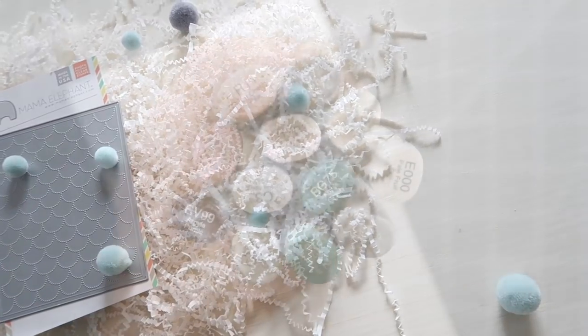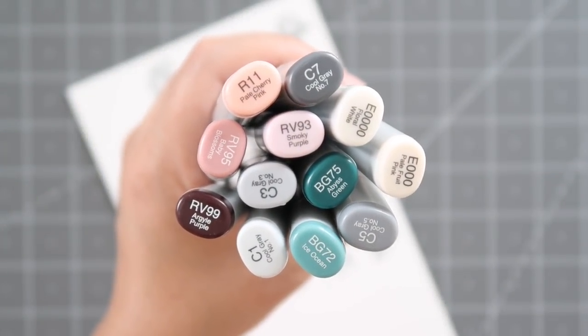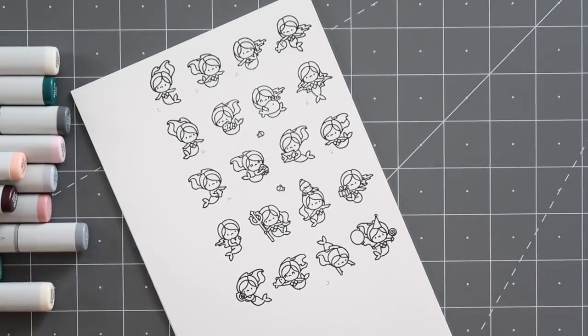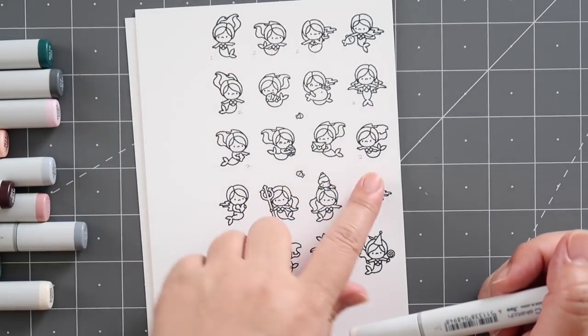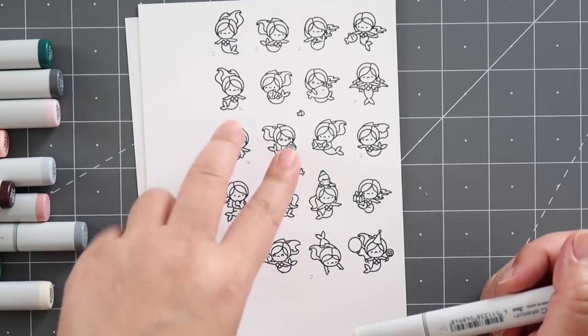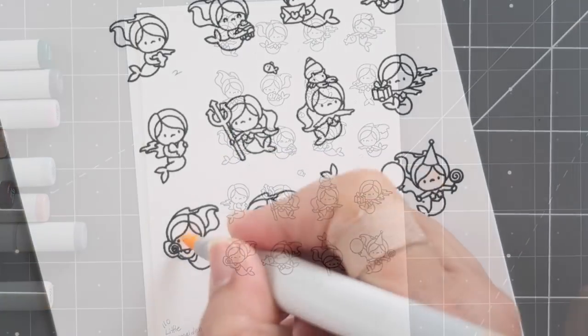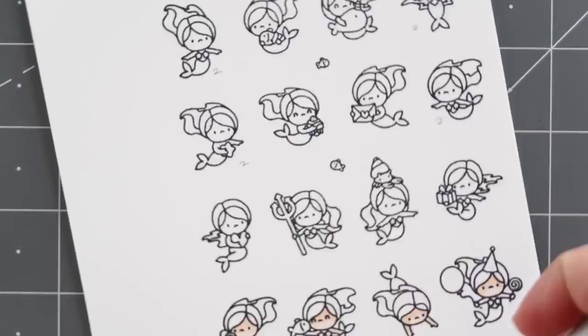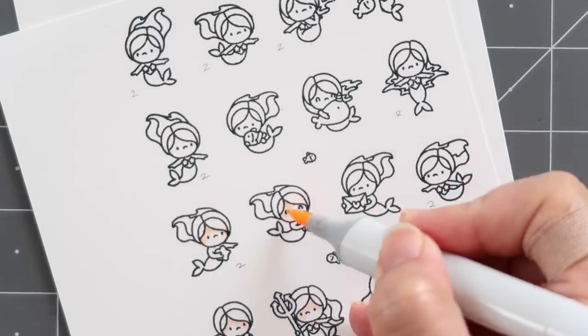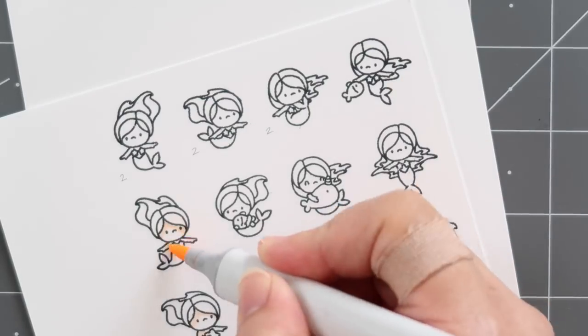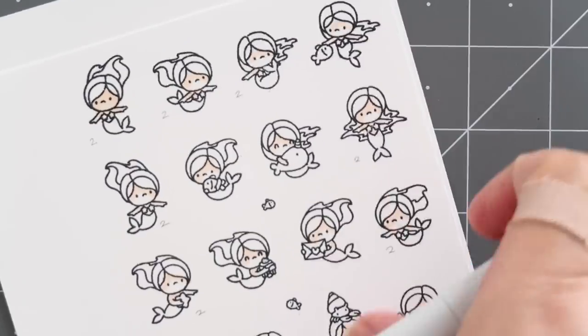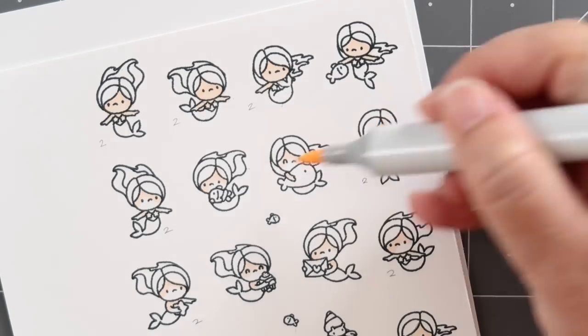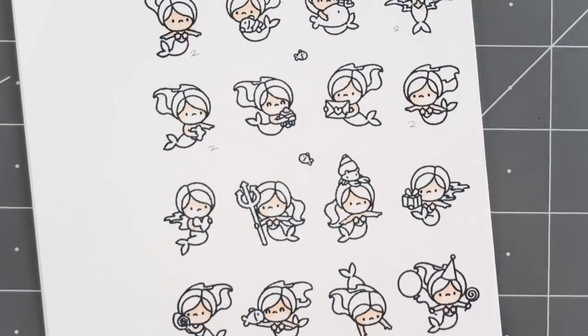I'll be using Copic markers to color in my mermaid images today. I just refilled all my markers and I am Copic marker happy right now. I'm doing three different color themes for my mermaids. If you know me, you know that I love using all of the stamps in a new set. There are 20 mermaid images that come in the set and I will be using every single one of them for two cards. I'm using a purple-brown color theme, a dark blue-green color theme, and a gray-black color theme.